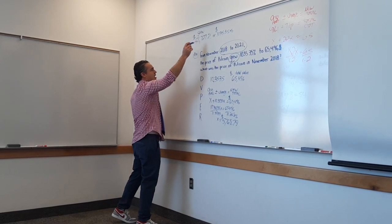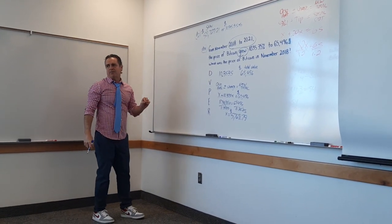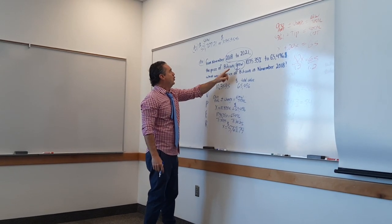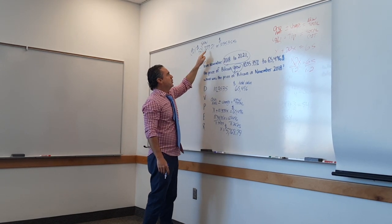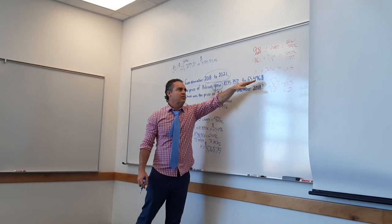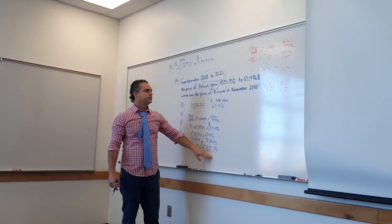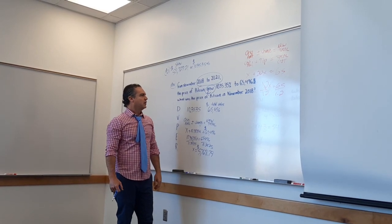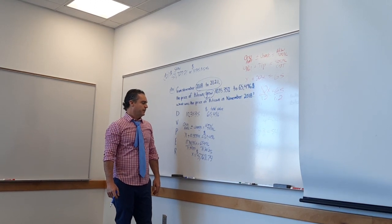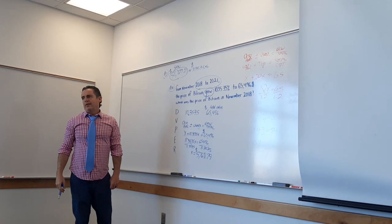Why is the other problem the standard problem? Because it says from November 2018 to 2021, the price of Bitcoin grew $59,727.21 or 1,035.35%. Take 65,496 and subtract 5,768.79. What do you get? $59,727.20 — right there. Total number times a percent equals a part number.